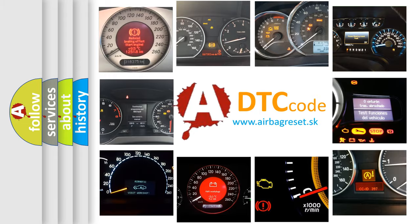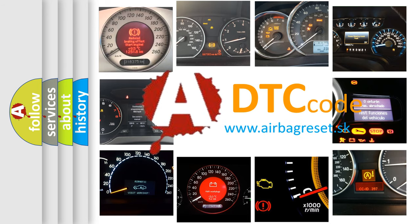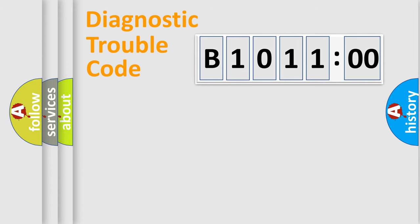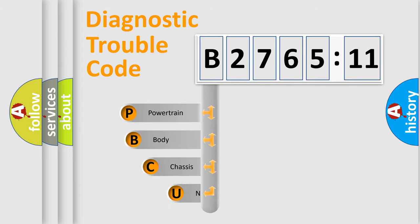First, let's look at the history of diagnostic fault code composition according to the OBD2 protocol, which is unified for all automakers since 2000. We divide the electric system of automobile into four basic units: Powertrain, Body, Chassis, and Network.